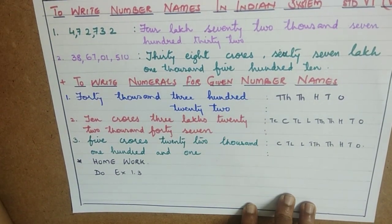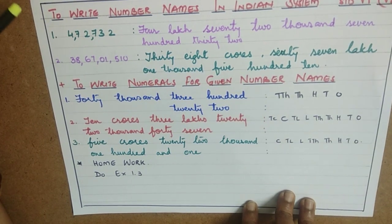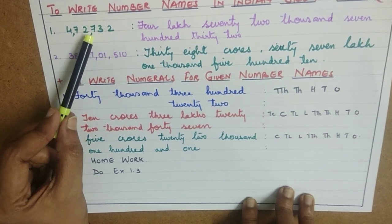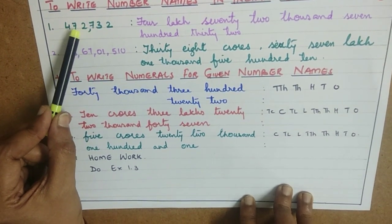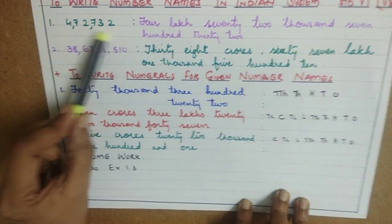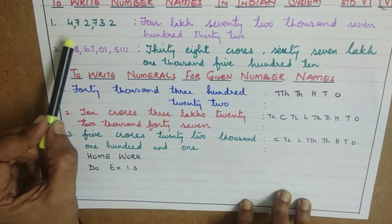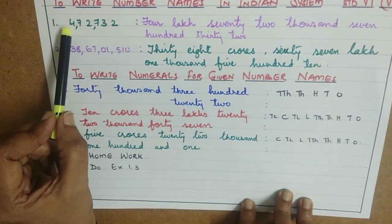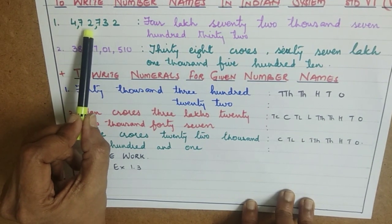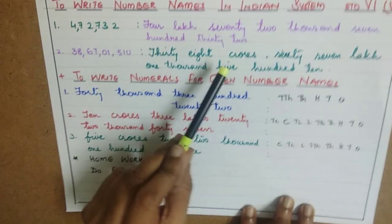So how to write the number names in the Indian system. First, when the number is given, count: ones, tens, hundreds — put a comma; thousands, ten thousands — put a comma; and lakhs. We have divided it into various periods. Now to read this number: 4 is in the lakhs place, so 4 lakhs 72,723 is the number name of the given number.